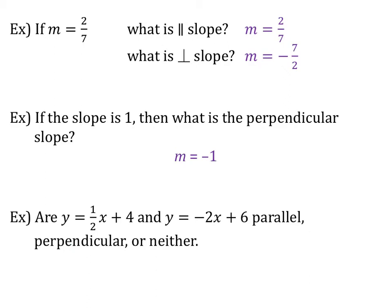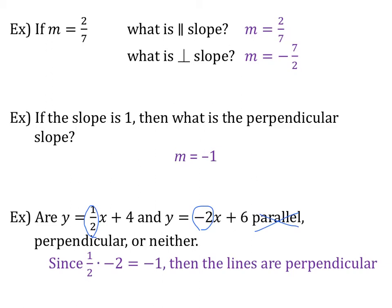And last, are y equals 1 half x plus 4 and y equals negative 2x plus 6 parallel, perpendicular, or neither? The two slopes we are talking about are 1 half and negative 2. Right away you can see these two are not parallel because 1 half and negative 2 are not equal. To check if they are perpendicular, we multiply them together, and if they equal negative 1, then these two lines are perpendicular. When we multiply 1 half times negative 2, we get negative 1, so these two lines are perpendicular.